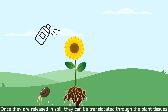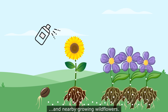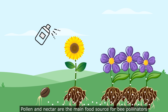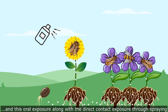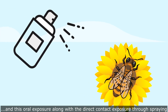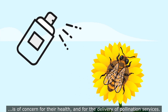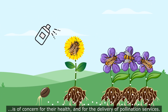Once they are released in soil, they can be translocated through the plant tissues, contaminating nectar and pollen of both crops and nearby growing wildflowers. Pollen and nectar are the main food source for bee pollinators, and this oral exposure along with the direct contact exposure through spraying is of concern for their health and for the delivery of pollination services.